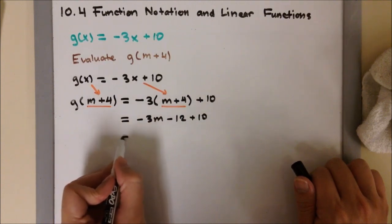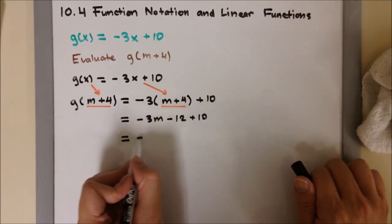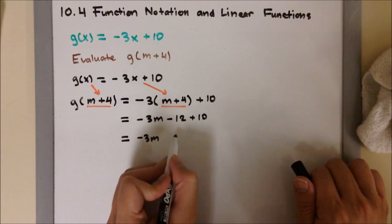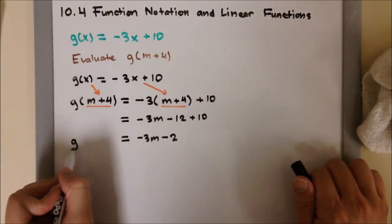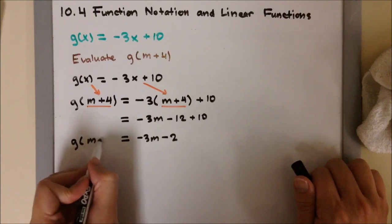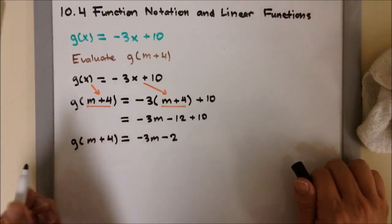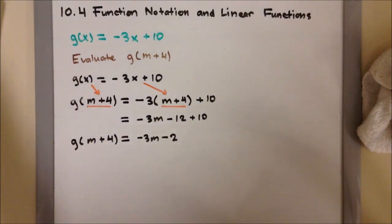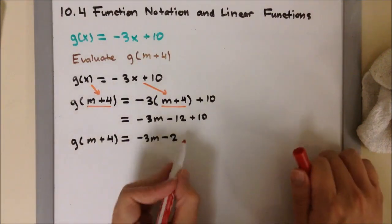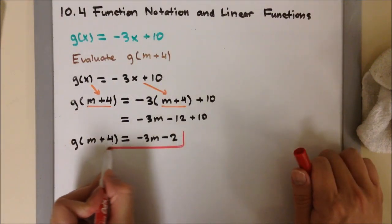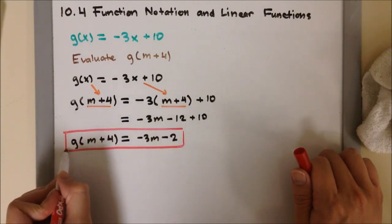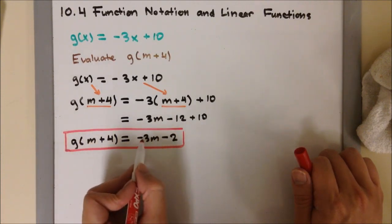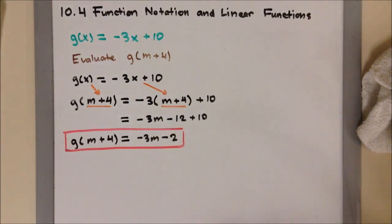And then I'm going to combine my like terms, which is my two numbers. So I'm going to have negative 3m minus 2. Bring down the left side. And then this is just my final answer. So g of m plus 4 is equal to negative 3m minus 2.